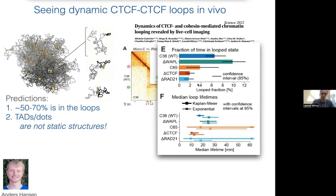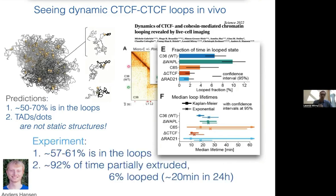So six percent of the time, the two CTCFs are actually looped, despite having this very pronounced Hi-C signal. The typical lifetime of a loop is somewhere between 20 to 30 minutes. These loops are relatively short-lived and not present most of the time, arguing that what's important is not the final loop state but the constant process of extrusion. The experiments also confirmed our prediction that about 50 to 70 percent of the genome is in loops at any moment.